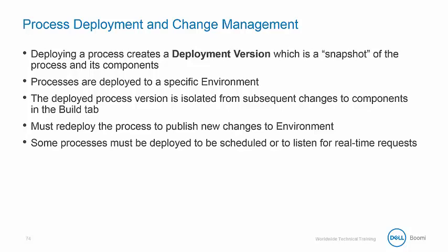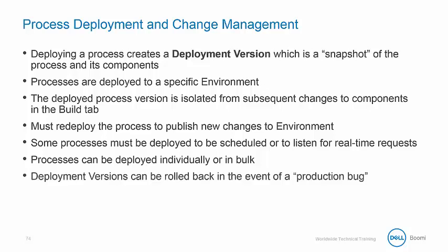The process must be redeployed in order to publish any new changes made in the build tab. Some processes need to be deployed and scheduled to listen for real-time requests, and these cannot be tested in the build tab. Processes can be deployed individually or in bulk. Finally, deployment versions can be rolled back in the event of a production bug, which allows you to redeploy the last working version while the process is being corrected.